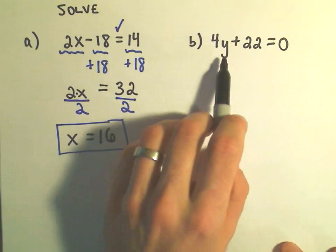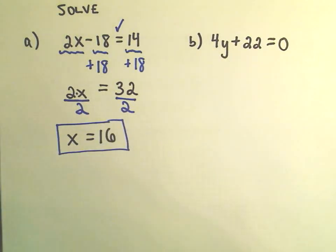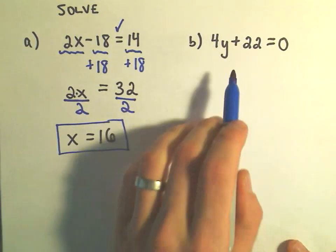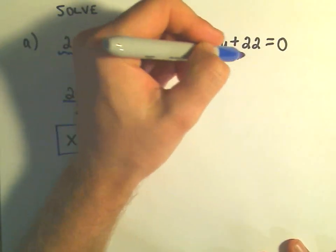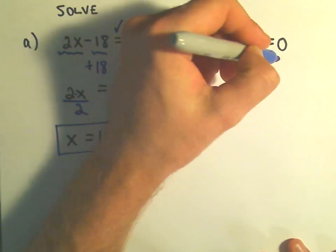Okay, in our next one, we have 4y plus 22 equals 0. Again, I want to get the stuff with the variable all by itself. Since I'm adding 22, I'm going to do the opposite, which is to subtract 22.